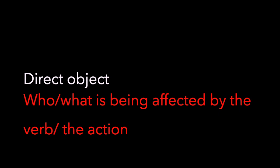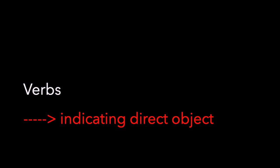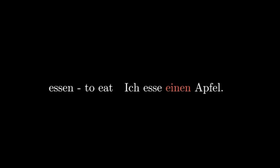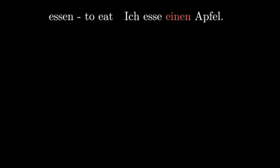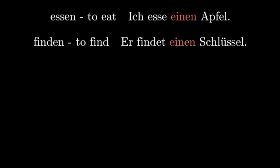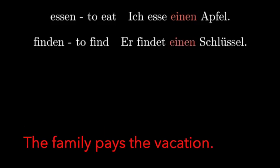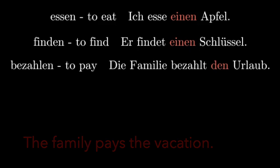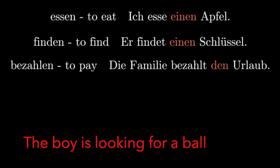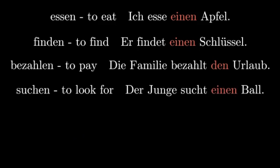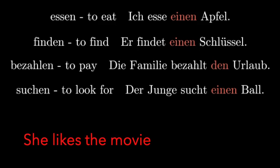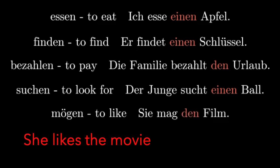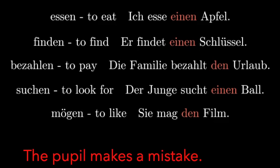There are a lot of verbs indicating that the direct object follows. For example, essen — to eat: Ich esse einen Apfel. Apfel here is the direct object. And how would you translate 'he finds a key'? The solution is: er findet einen Schlüssel. The boy is looking for a ball: Der Junge sucht einen Ball. Mögen — to like — is also indicative of Akkusativ. She likes the movie: Sie mag den Film. And machen — to make — the pupil makes a mistake: Der Schüler macht einen Fehler.